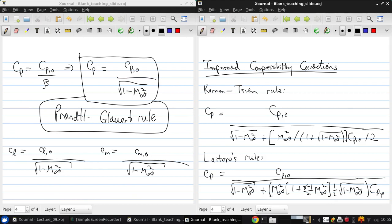So the rules are similar in that they both have a corrective term in the denominator which depend both on CP and M infinity, but the details of that term are different between the two corrections.